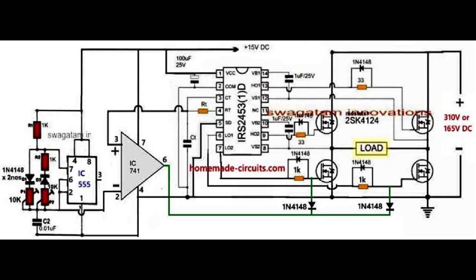The following diagram shows a practical example of how a simple IRS2453 H-bridge inverter circuit can be converted into a sine wave H-bridge inverter circuit. The left side consists of two IC stages: IC555, an astable stage, and an op-amp IC741 comparator stage. The comparator op-amp 741, or any standard op-amp, performs the main function of an SPWM generator.